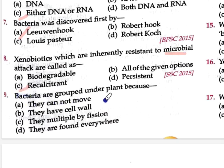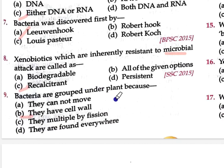Bacteria are grouped under plants because — A: they cannot move, B: they have cell wall, C: they multiply by fission, D: they are found everywhere. The correct answer is Option B: they have cell wall. Bacteria are placed under plants because, just like plant cells have a cell wall, bacteria also have a cell wall.